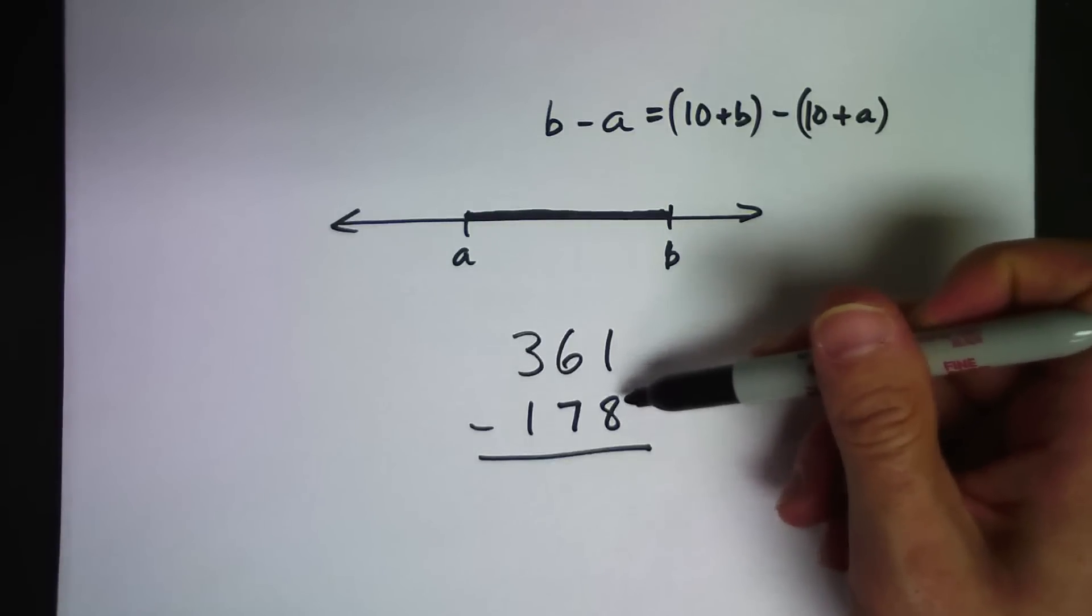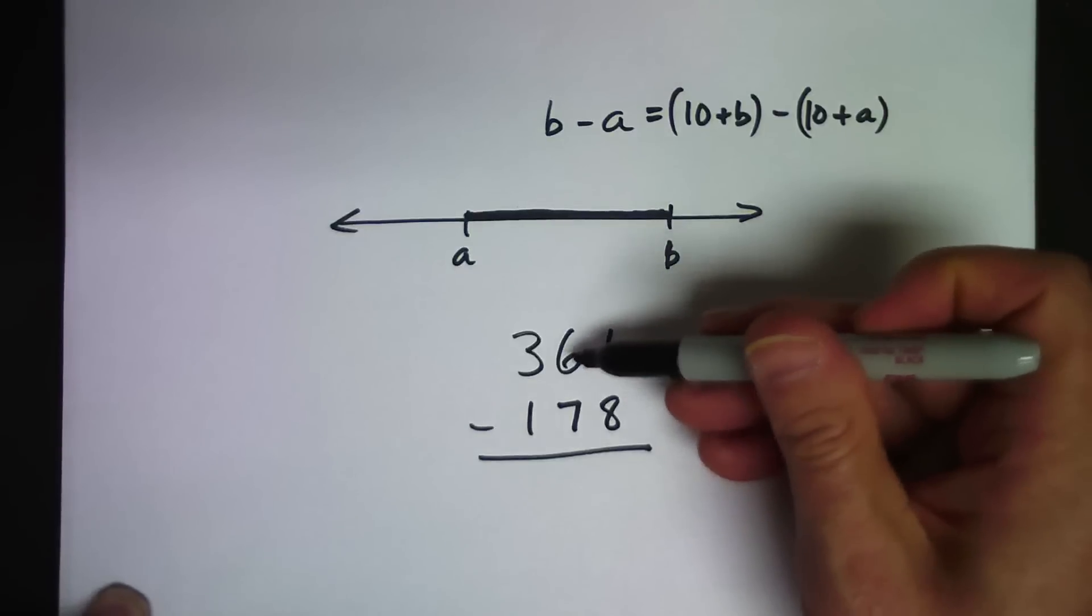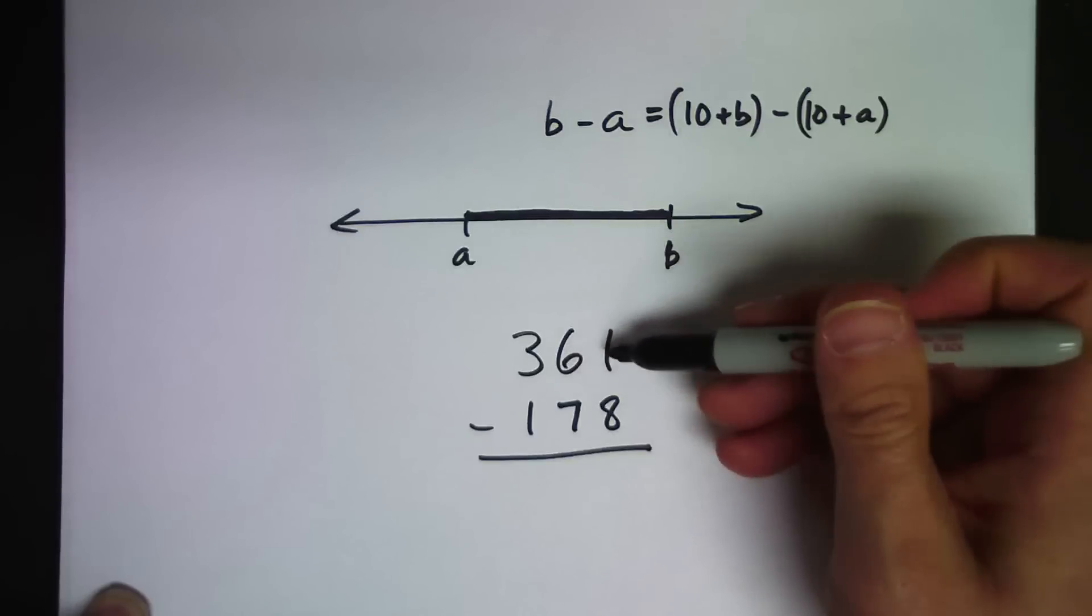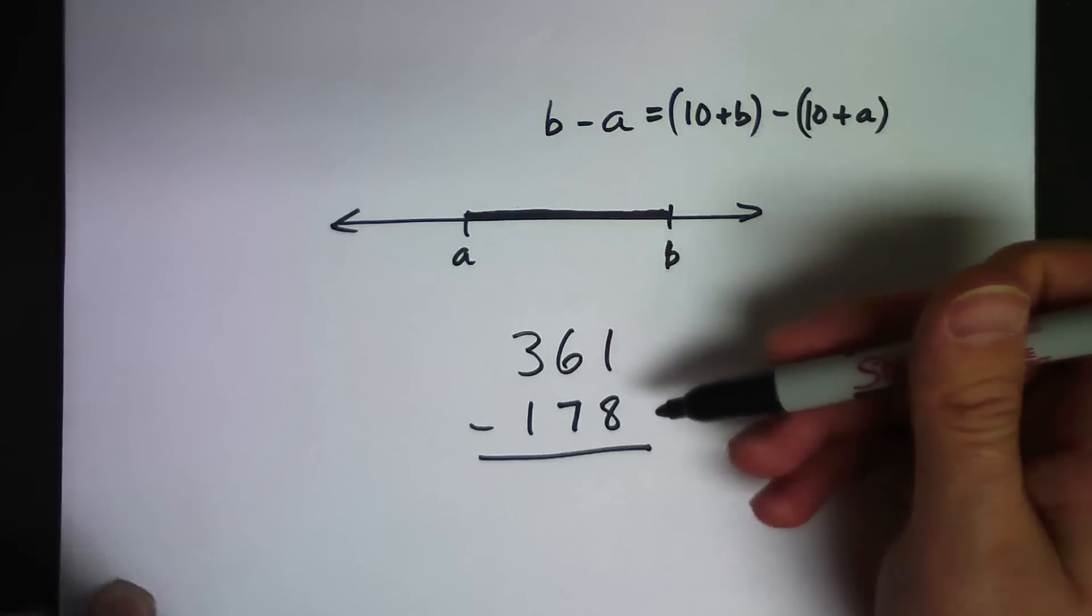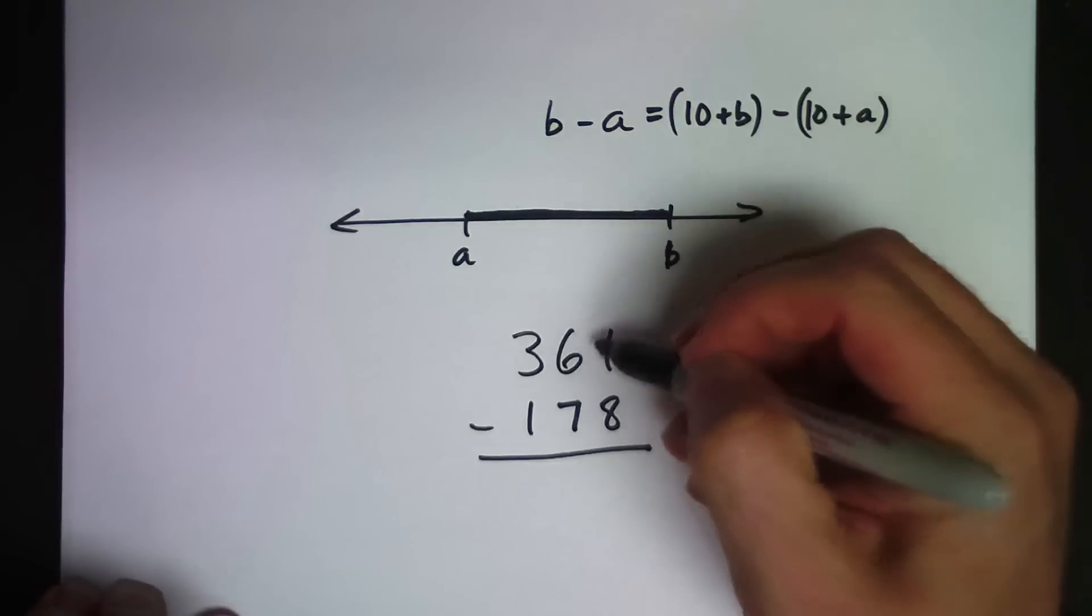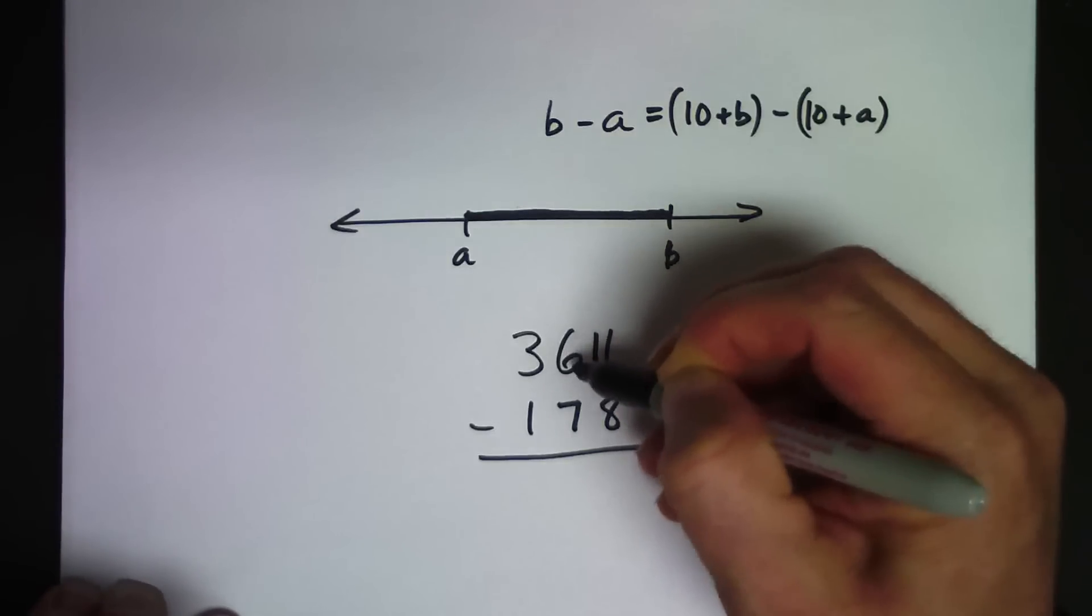so I'm not going to borrow. In the standard algorithm, you would borrow from the 6. You'd take one of those tens and make it 10 ones. But with the constant difference algorithm, or the compensation algorithm, I'm going to add 10. So that 1 is going to become 11, but I haven't changed the 6—I still have 6 tens there.